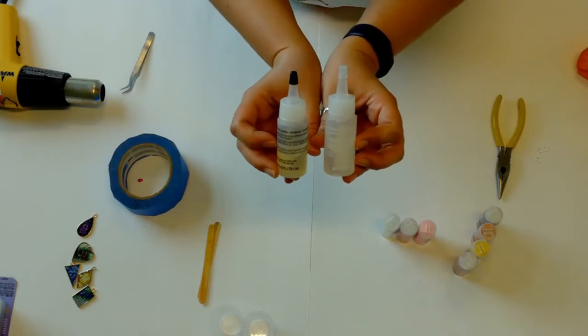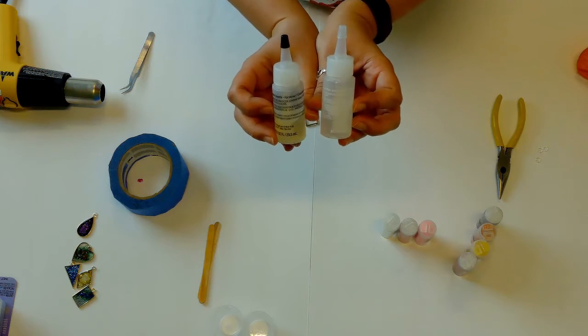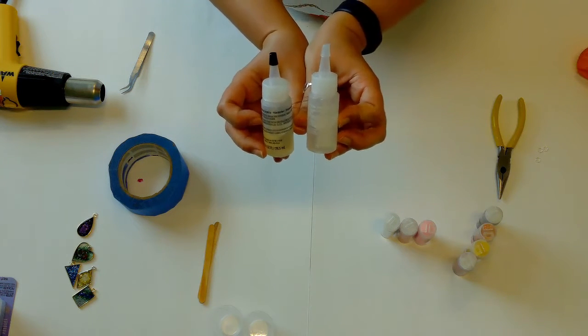The resin and hardener is always mixed at a 1 to 1 ratio. Be sure to read the directions carefully. I will be following the directions for this specific resin.